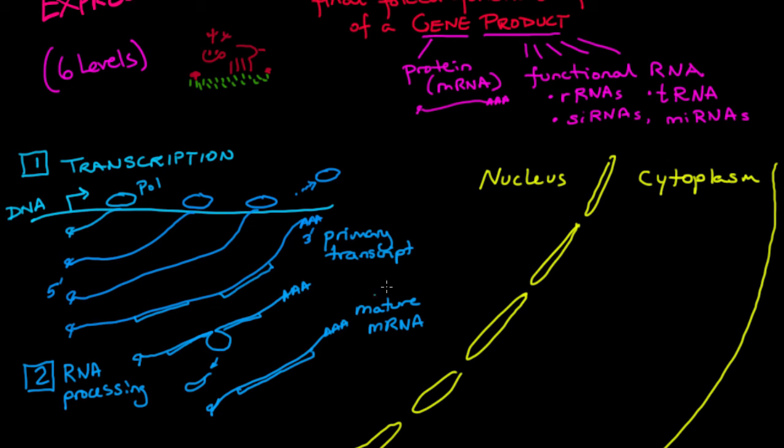And we're ready for the third level of gene expression regulation. And that is nuclear export. Because even if a gene is on and it is transcribed and then processed, it might be held back in the nucleus and not allowed to get out into the cytoplasm.